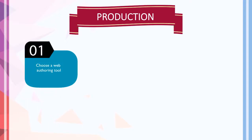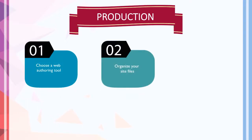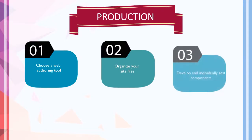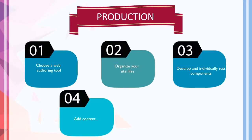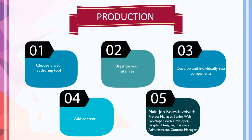In the production stage, the steps are: choose a web authoring tool, organize your site files, develop and individually test certain components to be incorporated into the website, and add the required content. The job roles involved are project manager, senior web developer, web developer, graphic designer, database administrator, and content manager.